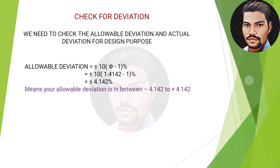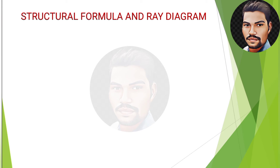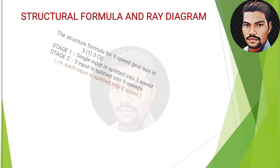To check the actual deviation, the formula is: (N_max_standard − N_max_actual) / N_max_actual × 100%. After calculating, the actual deviation is −2.5%, which falls within the allowable range of ±4.142%. This confirms that our selected standard speeds are suitable for designing the gearbox.